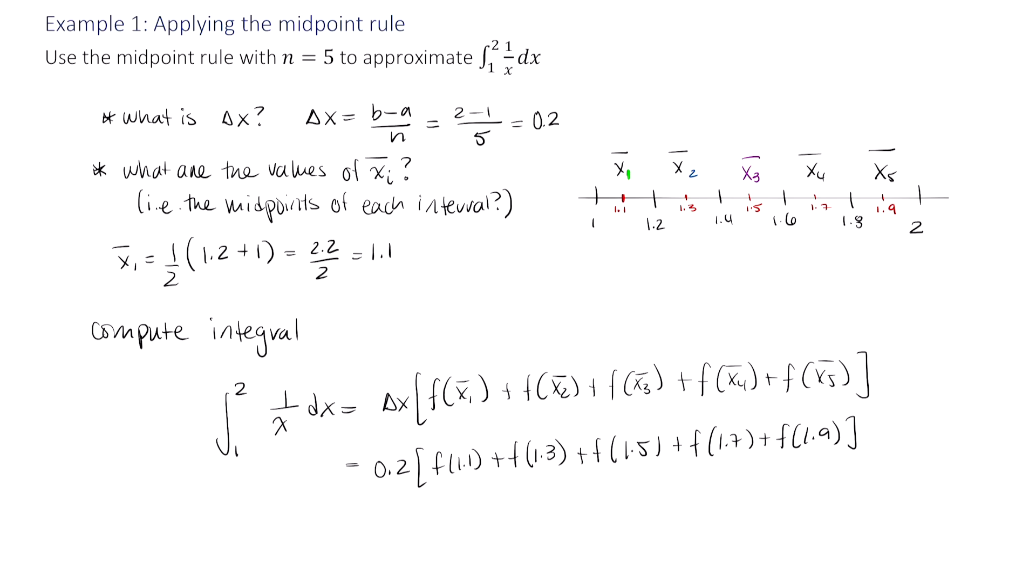So now let's evaluate. And remember, f(x) is right here. f(x) equals 1 over x. So all of these just become 0.2 times 1 over 1.1 plus 1 over 1.3 and so on. And actually, before I continue, let me fix this. This is not exact here. This is an approximation. So from this step here to this step, we're approximating the area under this curve. We end up with about 0.6919.